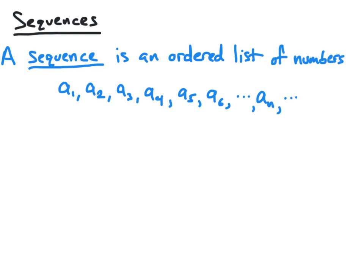So a1 is the number in the first position of the sequence, a2 is the number in the second position of the sequence, and so on.